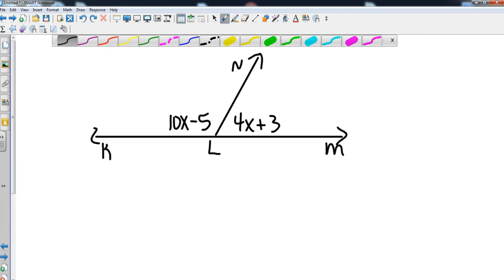Okay, so then you might get an example where they don't tell you what the angle is, you just have to know your classifications of angles. So obviously in this situation, KLM is a straight angle, giving us a total degrees of 180. So now we just take these two values, 10x minus 5 and add 4x plus 3, and we set those equal to 180 degrees.